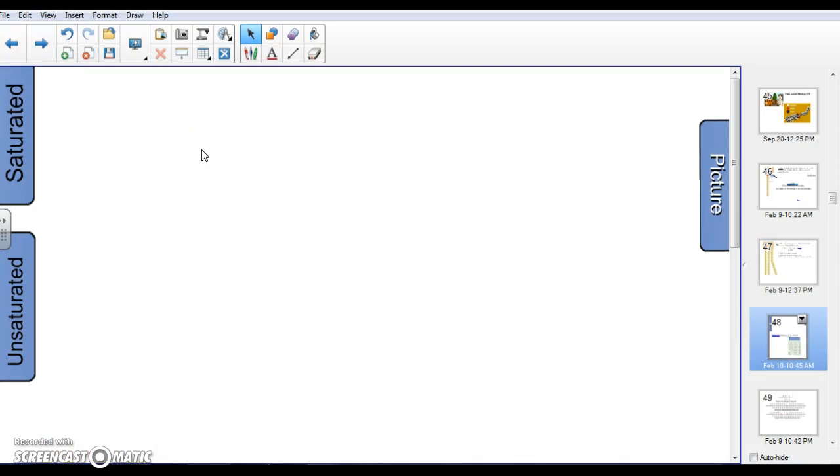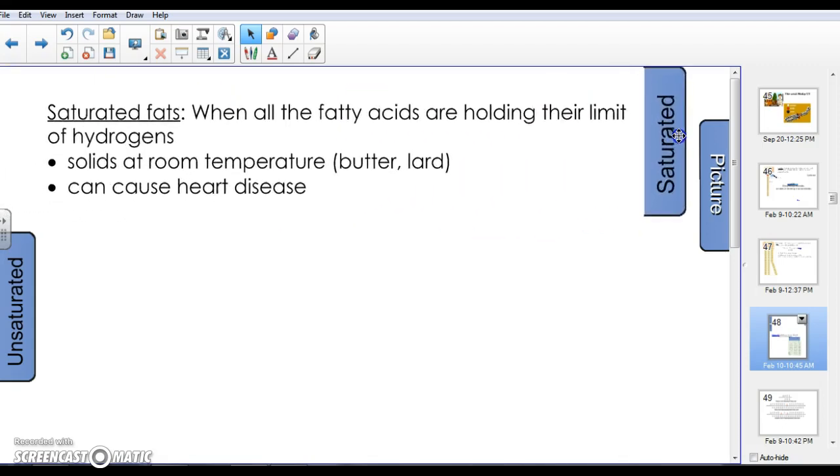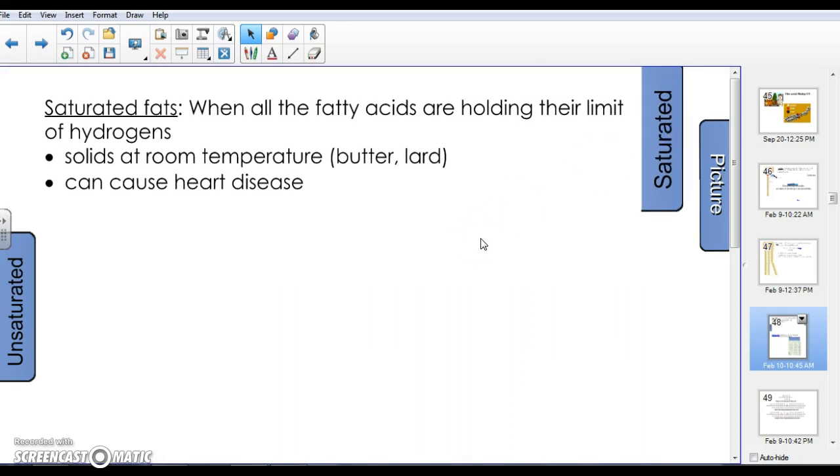Next, there are two types of fats, and I'm sure you've seen these terms when you looked at food labels. Saturated fats are basically when those fatty acid chains have their limit of hydrogens, meaning they're all single bonds between the carbons and hydrogens. Saturated fats are solids at room temperature. Examples are butter and lard. Saturated fats in excess can cause heart disease because of their shape and structure, they can easily build up in your blood vessels causing blockages.